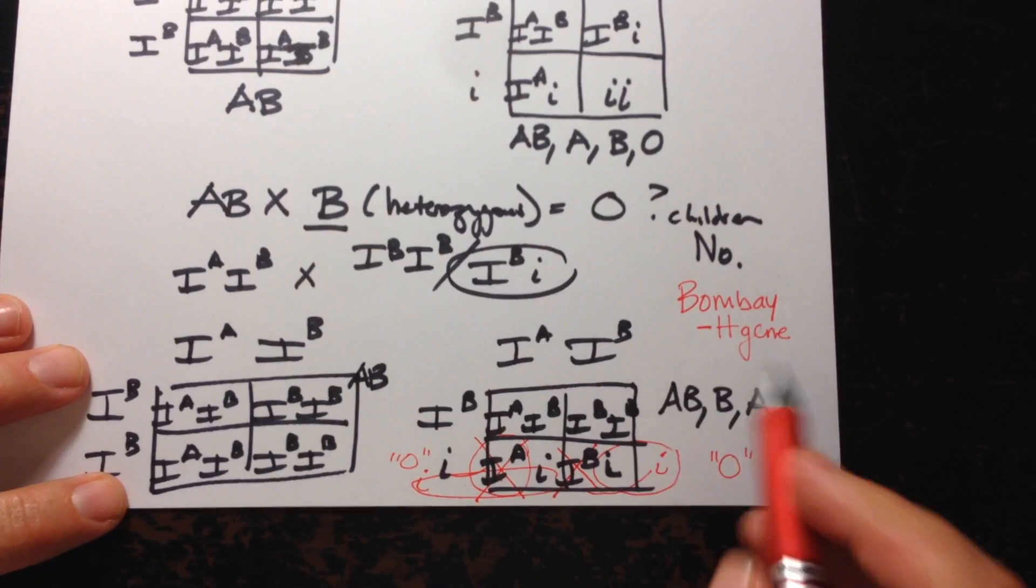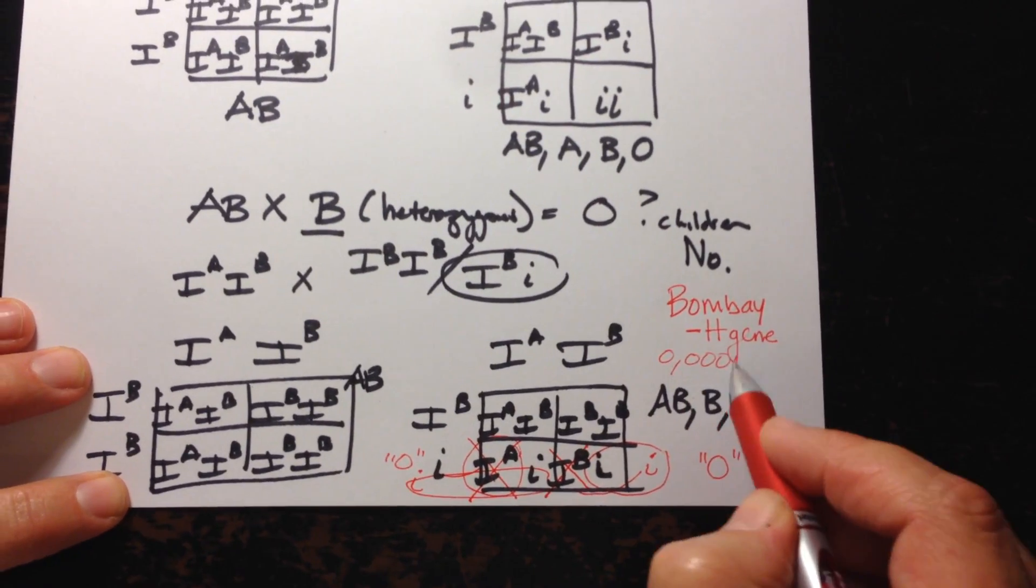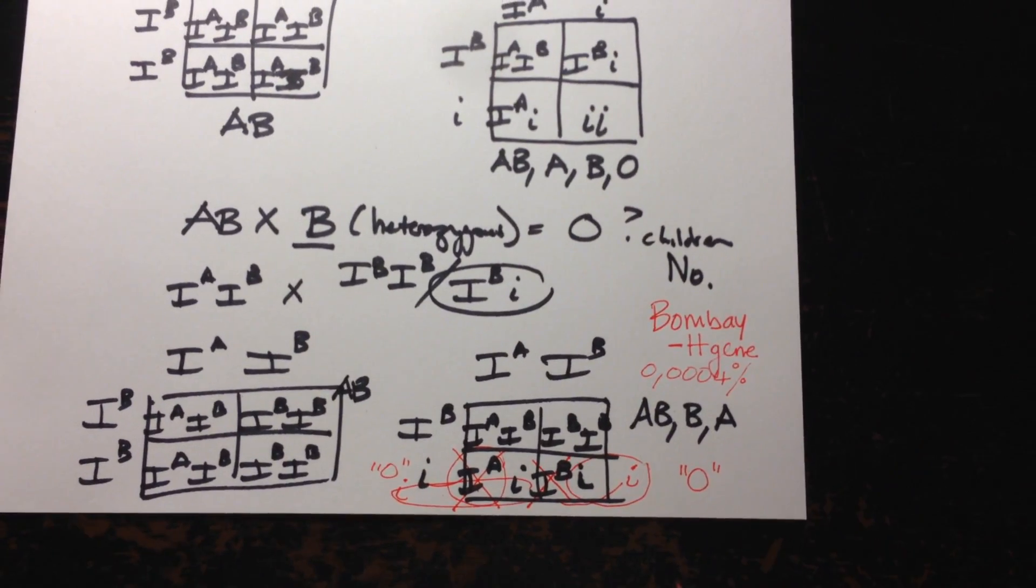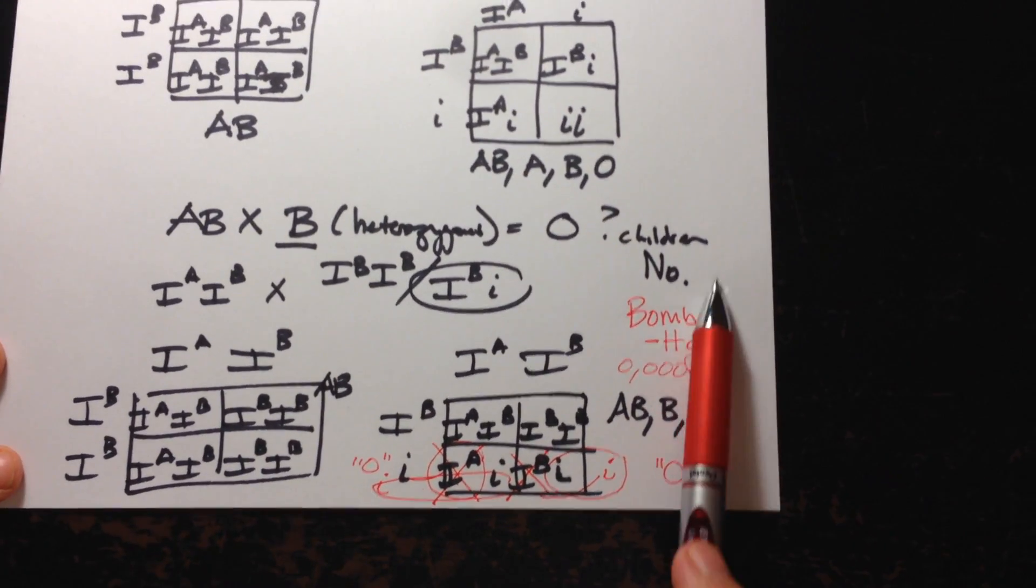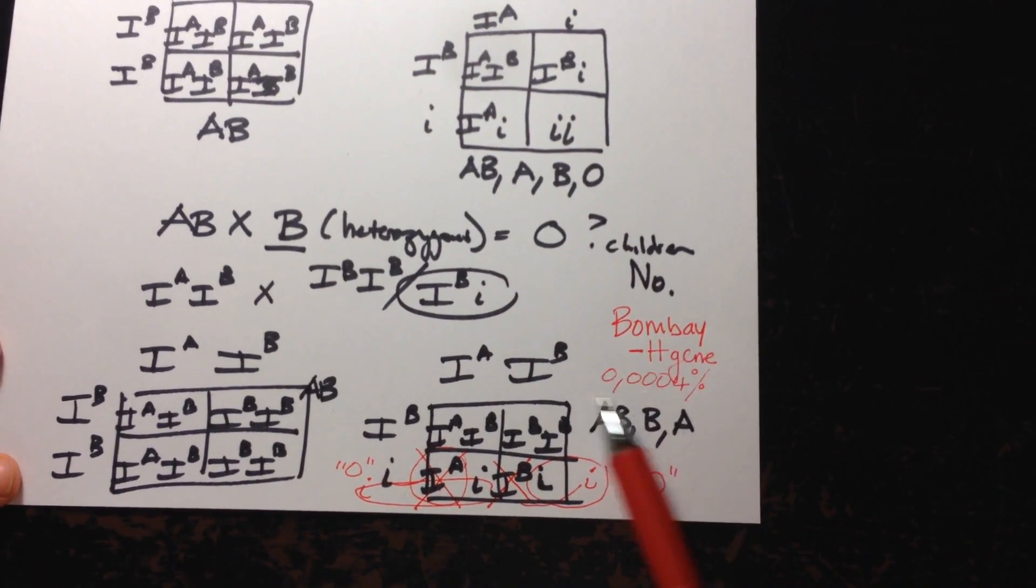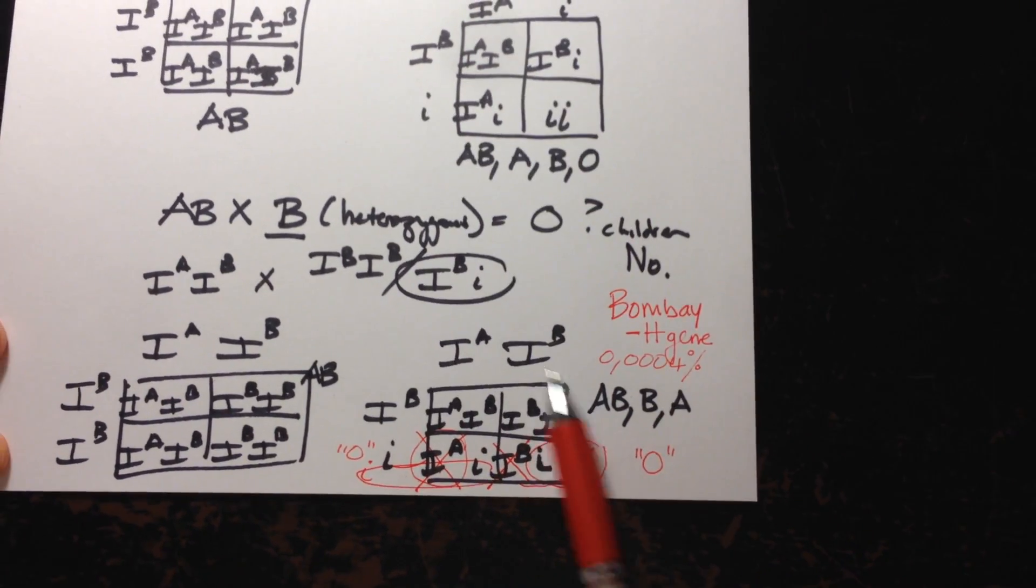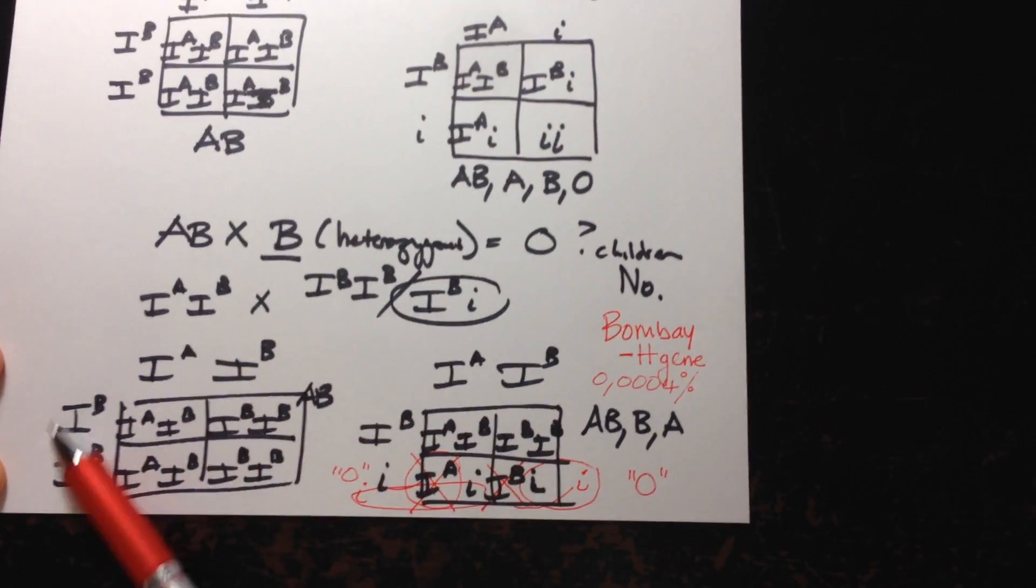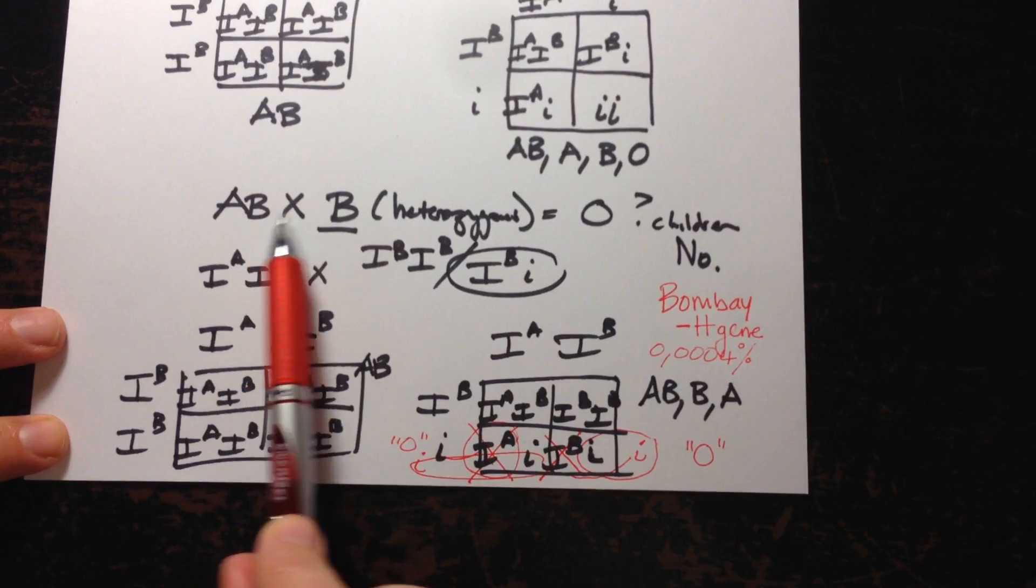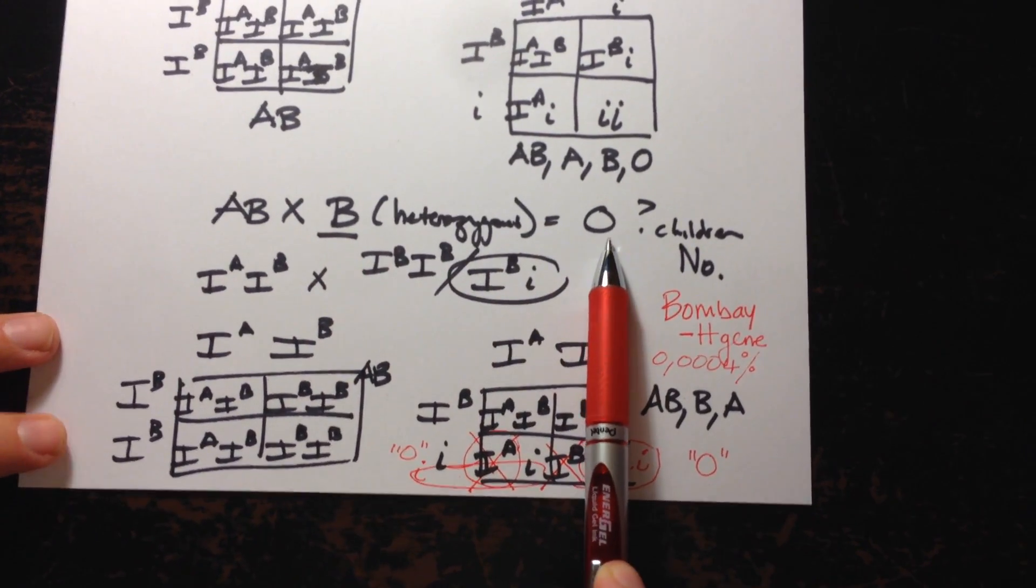But as I said, that is rare. It's only about 0.0004% of the human population that has the Bombay phenotype. So if you do consider that in one of your answers, I'll give you a bonus point if you mention that that's possible. But with these normal genotype scenarios here, you see it's not possible for a parent with type AB or B blood to make type O children.